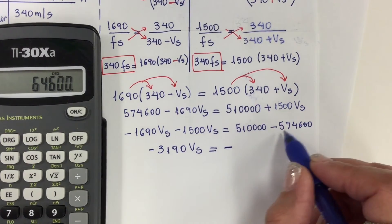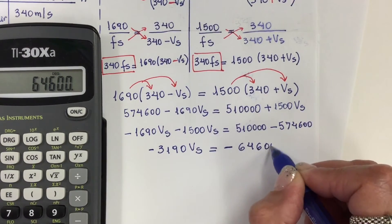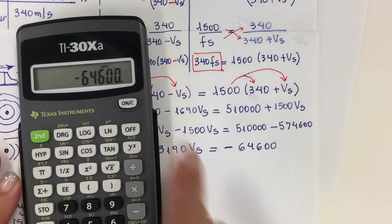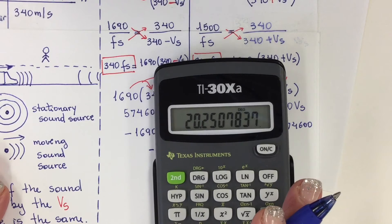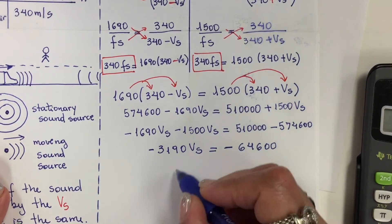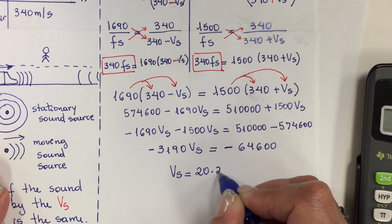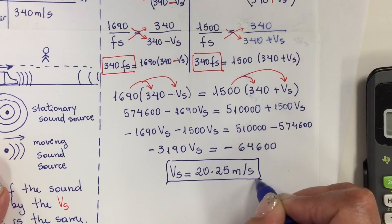The right side becomes 574,600 minus 510,000, which is 64,600. This is negative 3190·Vs equal to negative 64,600. Dividing both sides by negative 3190 gives Vs equal to 20.25 meters per second. So the speed of the train is 20.25 m/s.